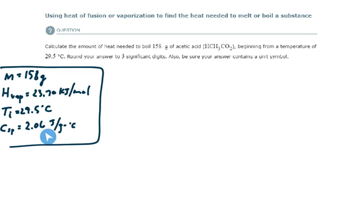So I have here a little list of givens. Because this problem says calculate the amount of heat needed to boil 158 grams of acetic acid, let's go ahead and also get the boiling point of acetic acid, which is 117.9 degrees Celsius. The melting point of acetic acid is 16.6 degrees Celsius. We're going to use these values to figure out where we are.